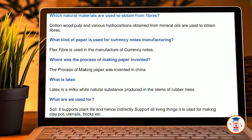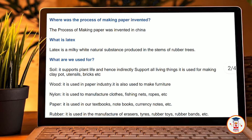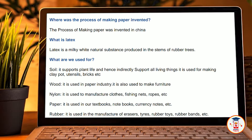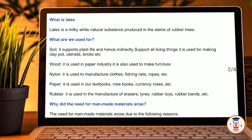What are the uses of the following materials? Soil: it supports plant life and hence indirectly supports all living things; it is used for making clay pots, utensils, bricks, etc. Wood: it is used in paper industries and to make furniture. Nylon: it is used to manufacture clothing, fishing nets, ropes, etc. Paper: it is used as textbooks, notebooks, currency notes, etc. Rubber: it is used to manufacture erasers, tires, rubber toys, rubber bands, etc.